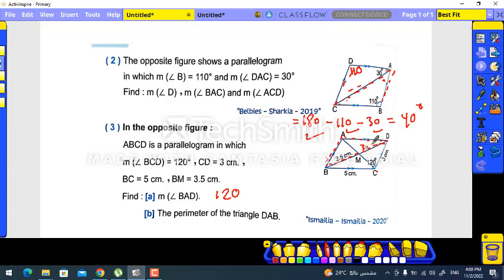3 is opposite to 3 and 5 is opposite to 5. So the perimeter now: AD is 5 plus AB is 3, plus BD. Take care, BD is 3.5 plus 3.5.